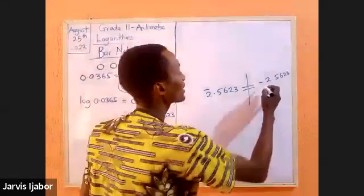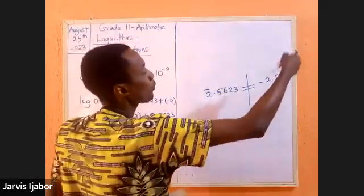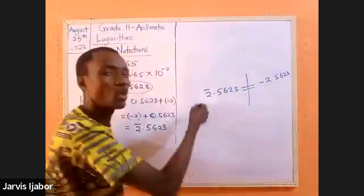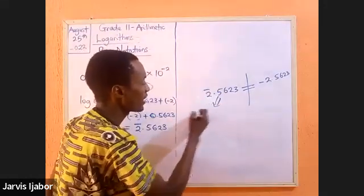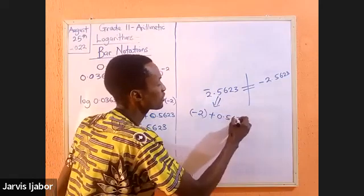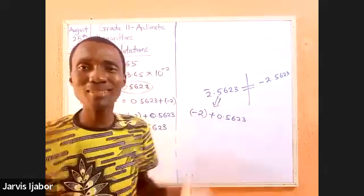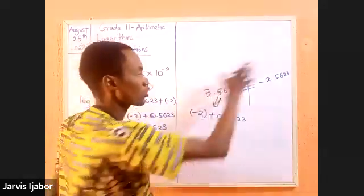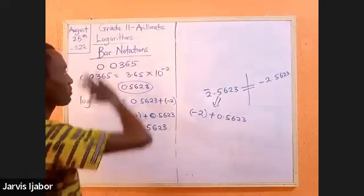So what you must take note of is that these two are not the same. This one means that it is negative 2.563. This one means negative 2 plus 0.5623. So that's something you must log into your imagination in a matter of bar notation.